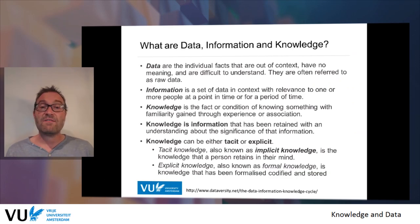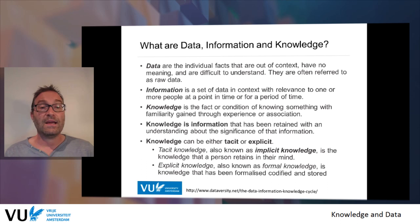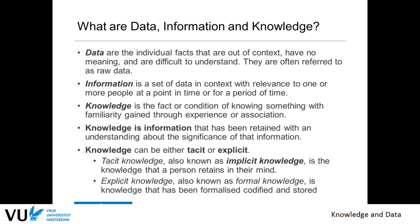Data are individual facts that are out of context, have no meaning and are difficult to understand. They are often referred to as raw data. Information is a set of data in context with relevance to one or more people at a point in time or for a period of time. Knowledge is the fact or condition of knowing something with familiarity gained through experience or associations. Knowledge is information that has been retained with an understanding about the significance of that information.